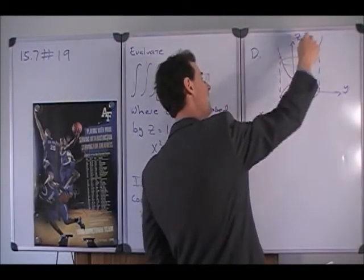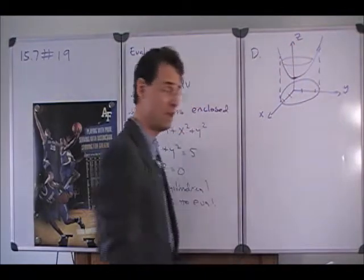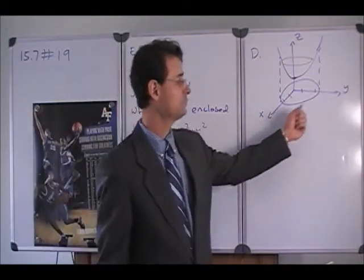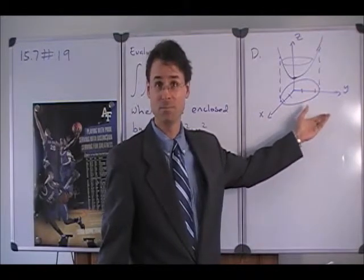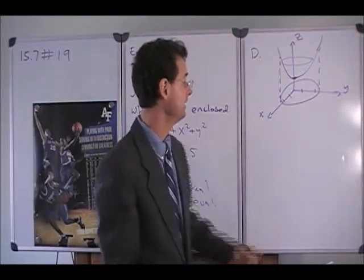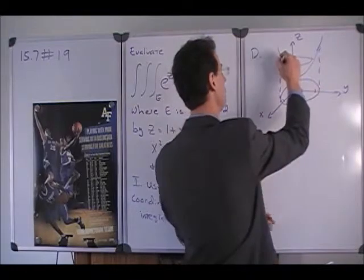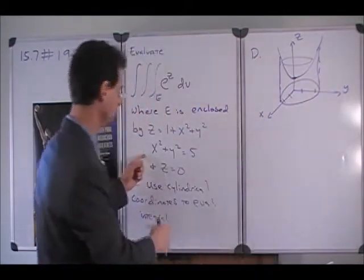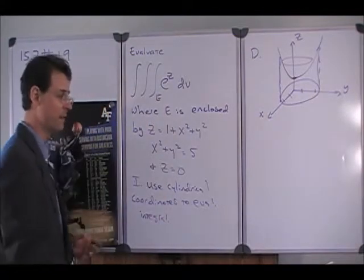So the paraboloid is like the top lid of the region of space that we're interested in. The xy plane itself, z equals zero, is the bottom. And then the sides are formed by the right circular cylinder, x squared plus y squared equals five.